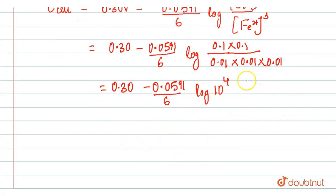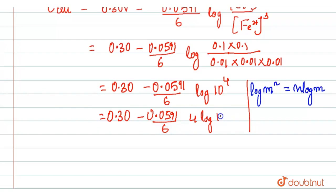You will get 0.30 minus 0.0591 divided by 6 log of 10 raised to the power 4. Now, you have to just apply one property of log. Log M raised to the power N is N log M. This is the property which we have to apply here. So, 0.30 minus 0.0591 divided by 6. This will become 4 log 10 and the value of log 10 is 1.